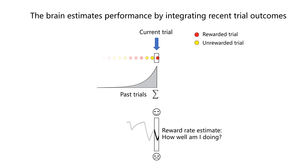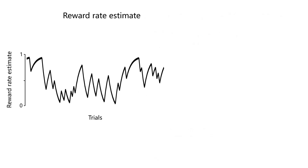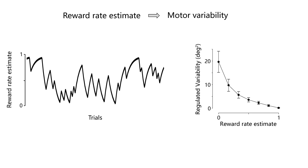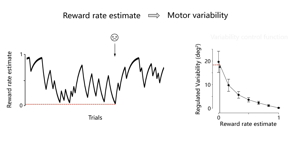But how is this running estimate of performance informing trial-to-trial variability? By performing additional analyses that you can read about in the paper, we established that the brain sets variability as a non-linear function of the recent reward rate. We call this function the variability control function. When you're doing well, it prescribes low variability; when a few trials later you're doing less well, it increases the variability, and even more so when performance drops further.